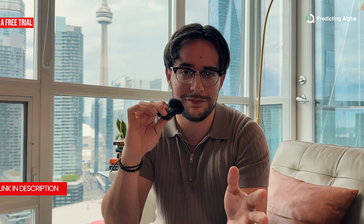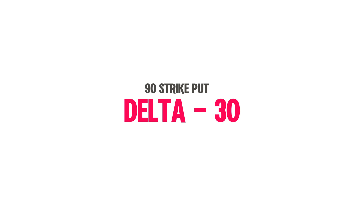Going back to our Apple example, if you had a 90 strike put option, then maybe it's trading at a delta of negative 30. And you'll notice that depending on which strike you pick, the delta is different.